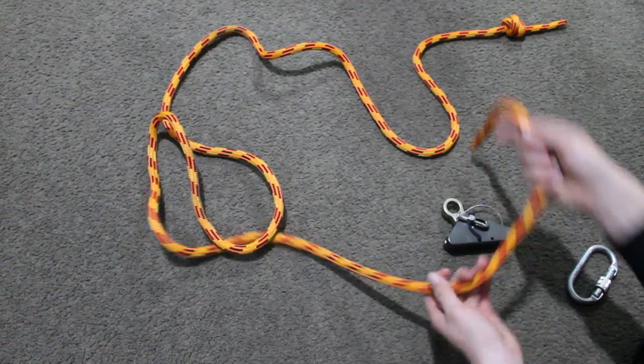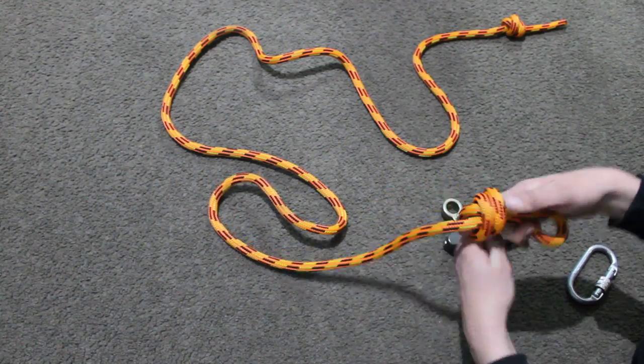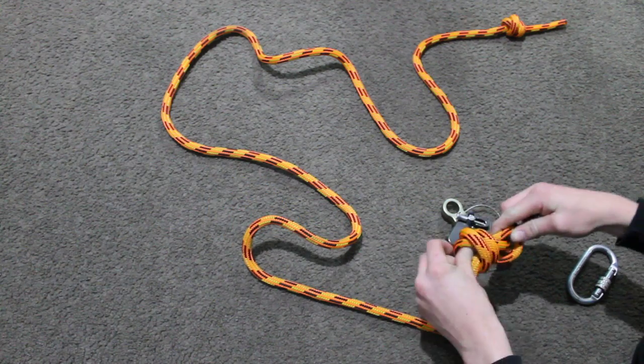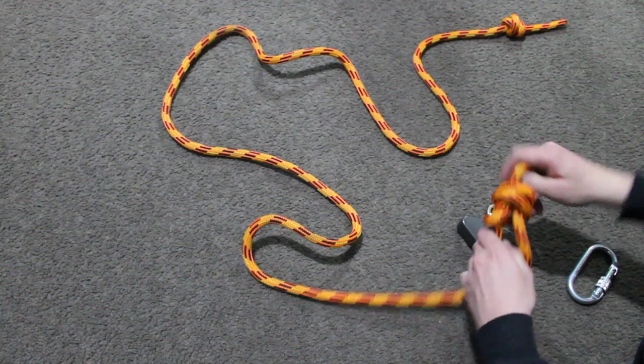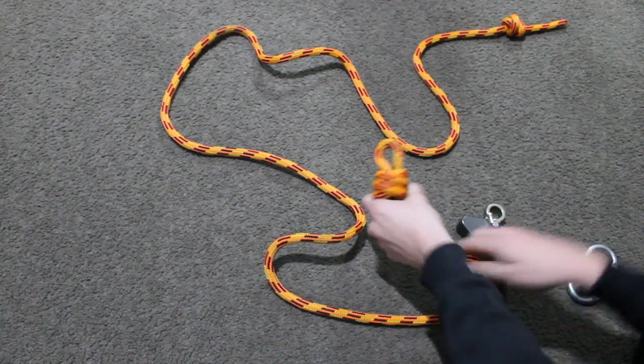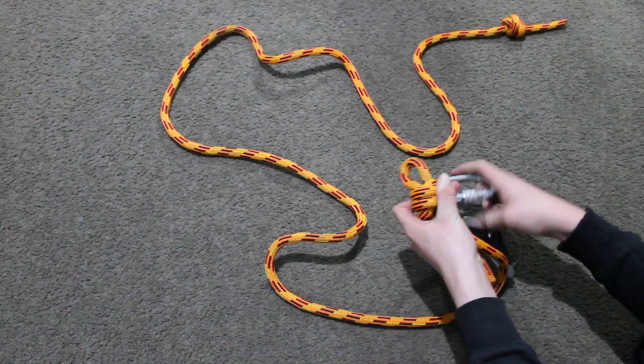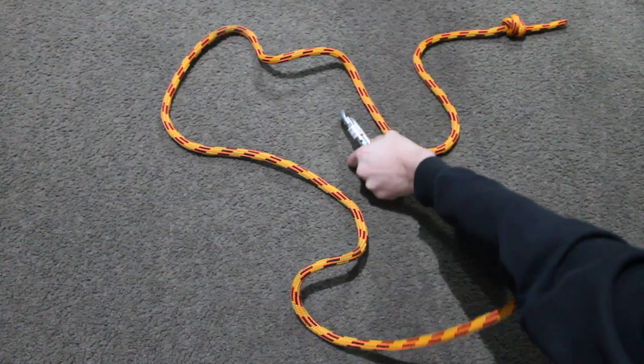The other end we want to tie a barrel slipknot to put our carabiner through. Like so, clip the carabiner through like that.